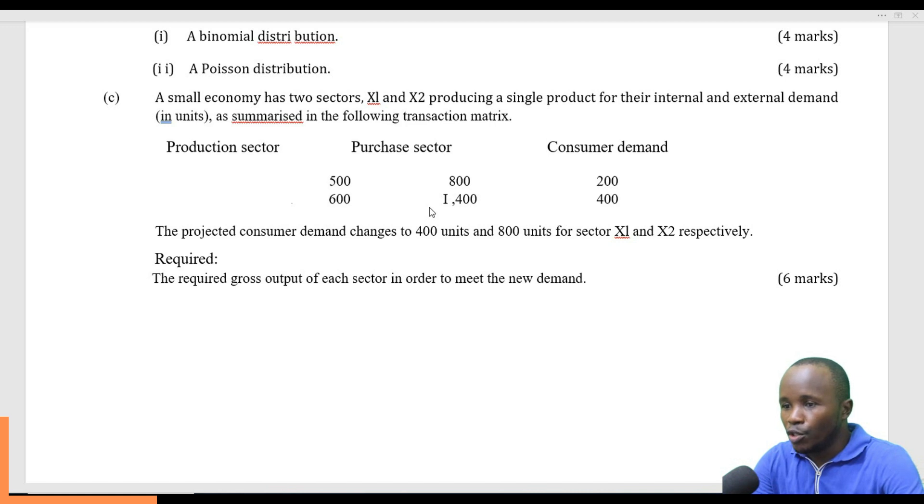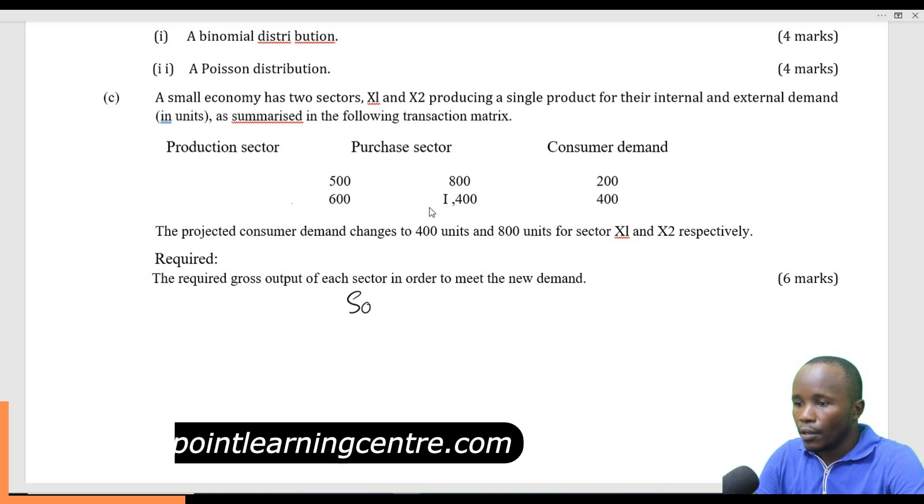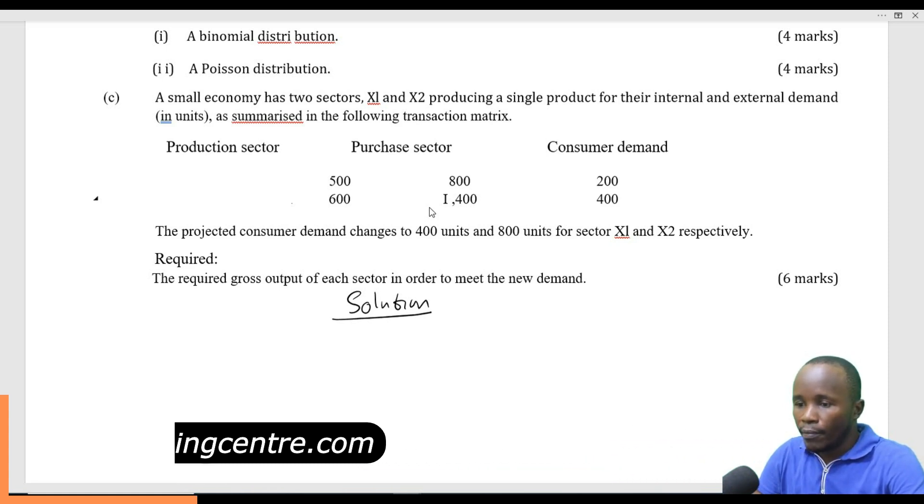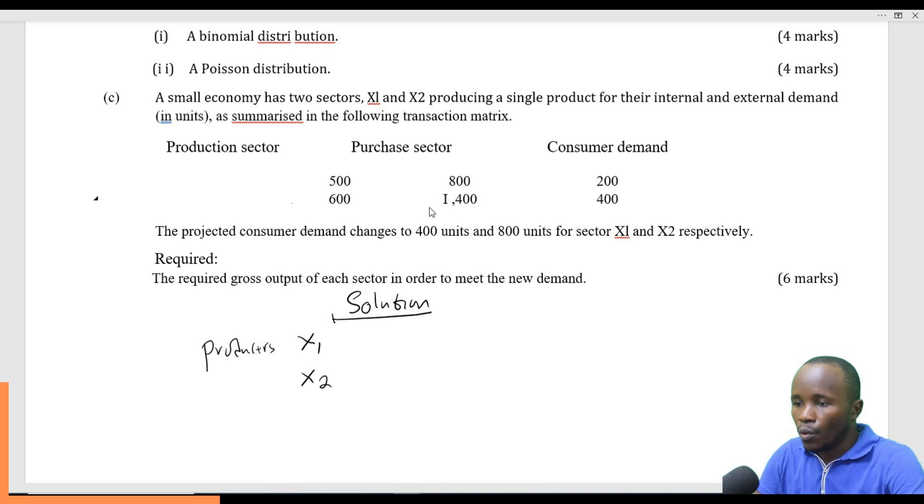Required: you are required to get gross output of each sector in order to meet the new demand. When you get this kind of equation, you need to form your matrices first. Here, we have producers X1 and X2, and users X1 and X2.